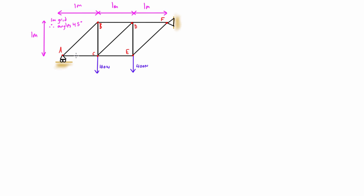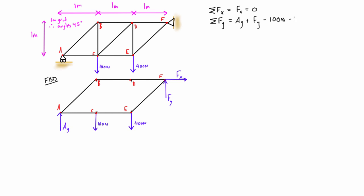The first thing we need to do is draw our free body diagram of the whole structure, and then we'll take the sum of forces in the x direction, the sum of forces in the y direction, and the sum of moments about point A. That'll give us Fy is 300 newtons up and Ra is 200 newtons up.